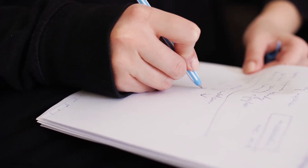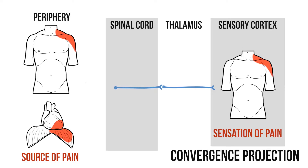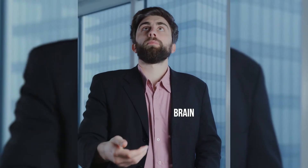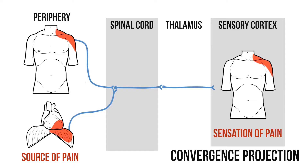There are a few ideas about how referred pain actually happens. The most commonly accepted, the convergent projection theory, suggests that it occurs when first order neurons from both regions synapse at the same second order neuron. In this model, pain signals from either region then take the same route back to the cortex, leaving the brain to take its best guess as to where the pain came from. With no other way to distinguish them, the brain tends to assume the signals have come from the dermatome.